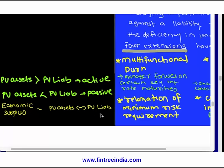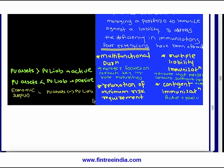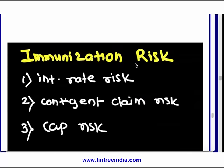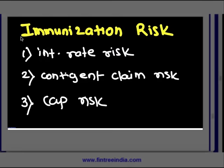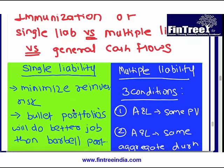Economic surplus is the present value of assets minus the present value of liabilities. Immunization risk has three components: interest rate risk, contingent claim risk — such as callability — and cap risk. If you have a non-callable liability but try to immunize it with a callable asset, you cannot match the risk factors. This covers immunization of single liability versus multiple liabilities versus generated cash flow.